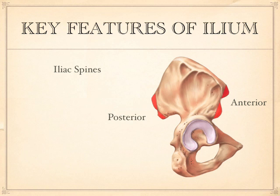This is anterior. This is posterior. One of the ways to remember posterior is this great big cutout here. If you could picture the four spines, then it's pretty simple. These are the two superior ones, in both front and back. These are above the other ones. These are inferior. And that's how you name them.